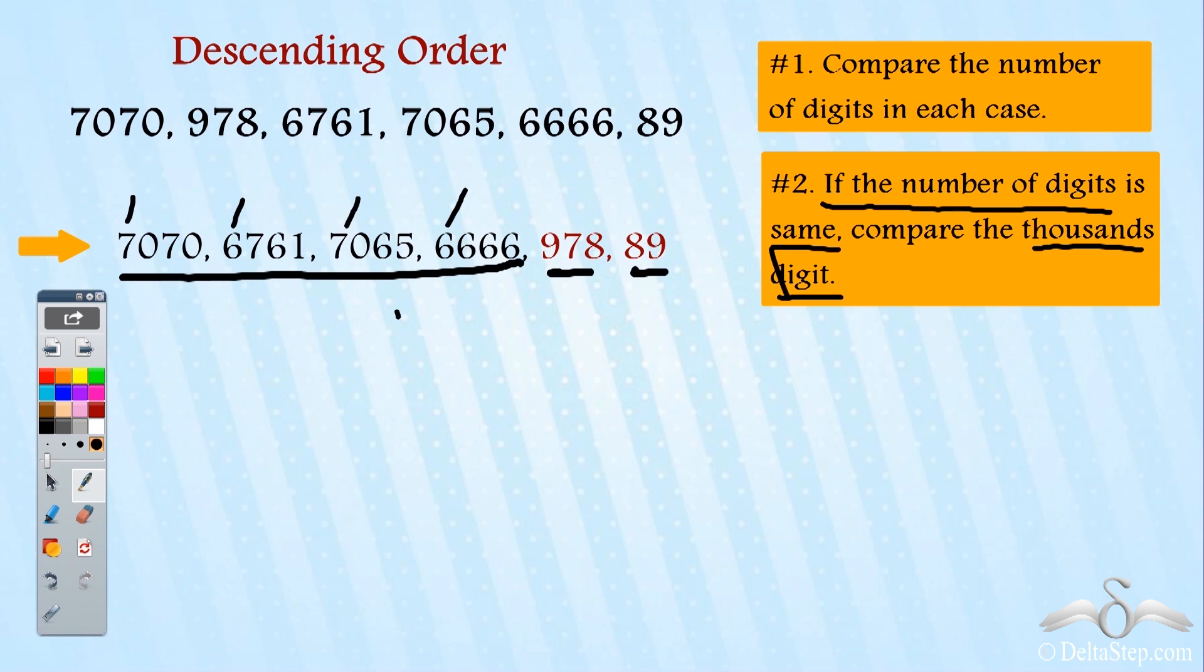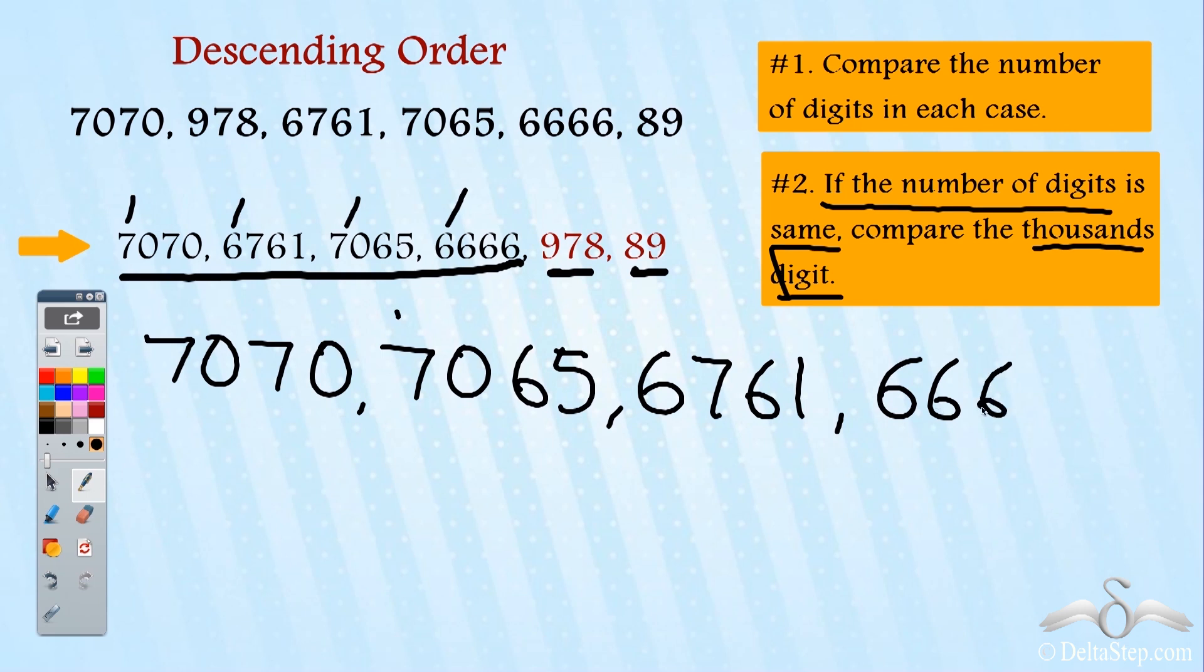So first I write the numbers starting with seven: 7070, then 7065, then the numbers starting with six which are 6761 and 6666, and then these two.